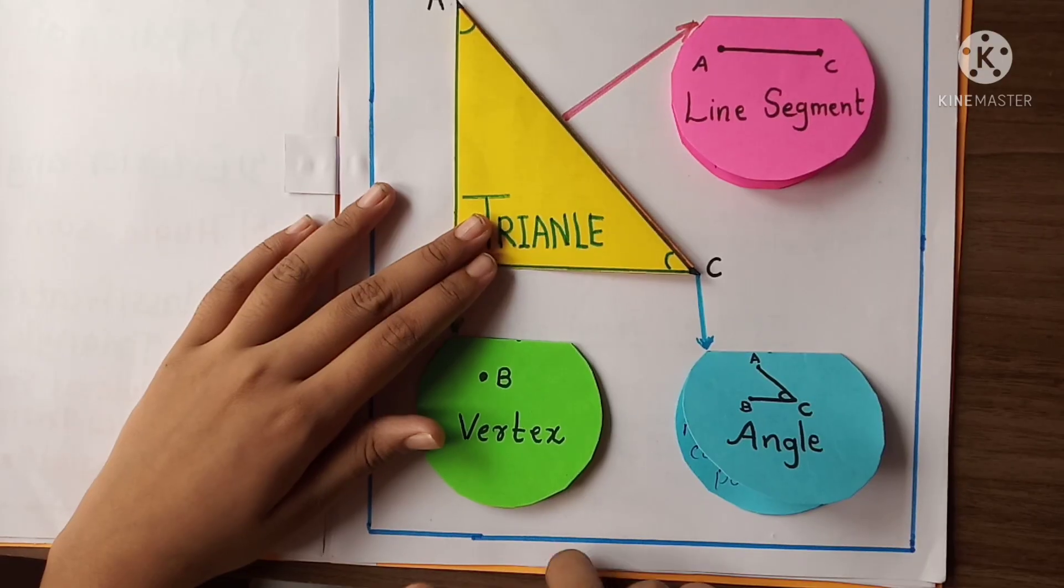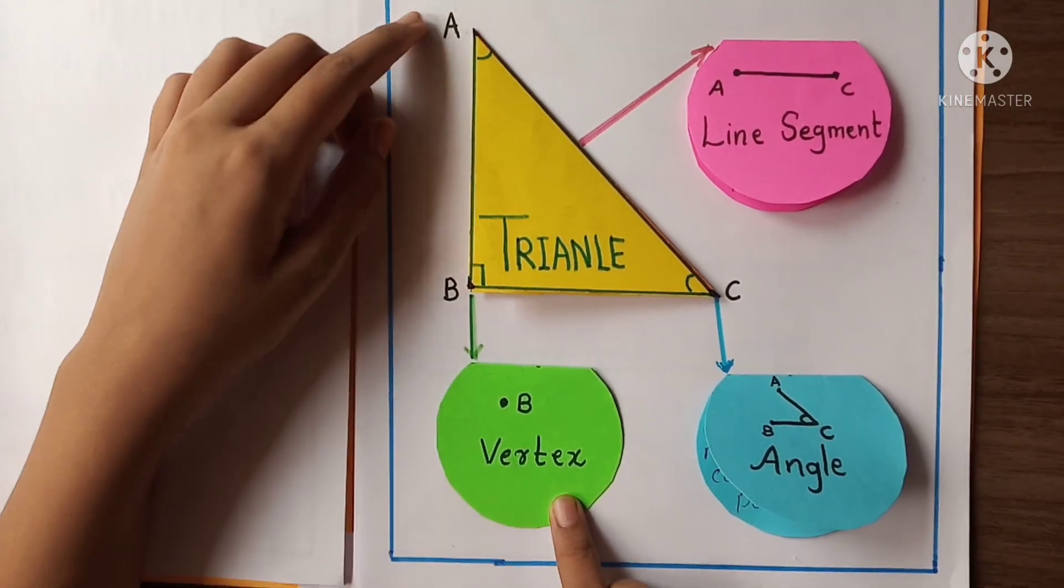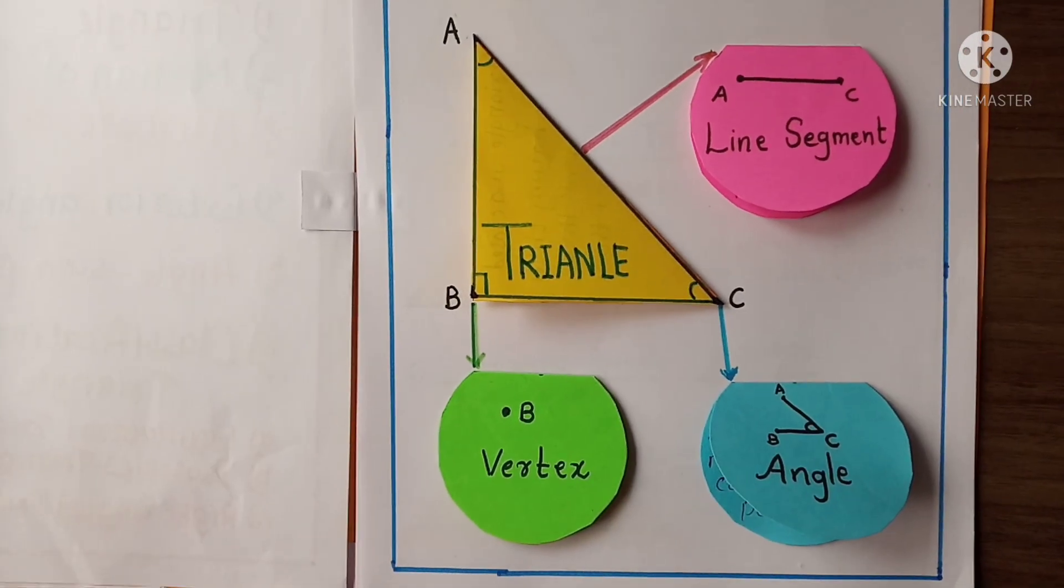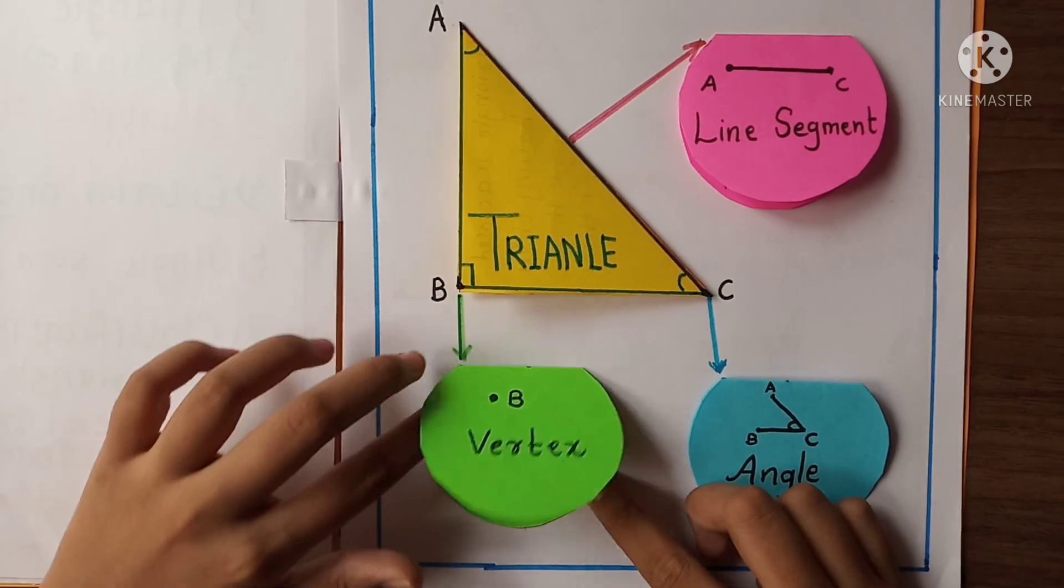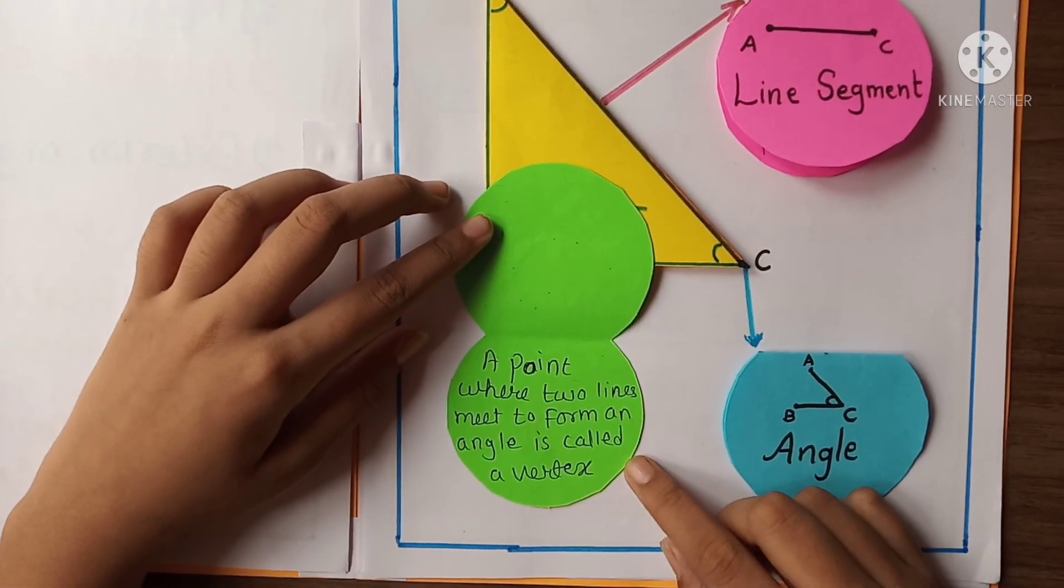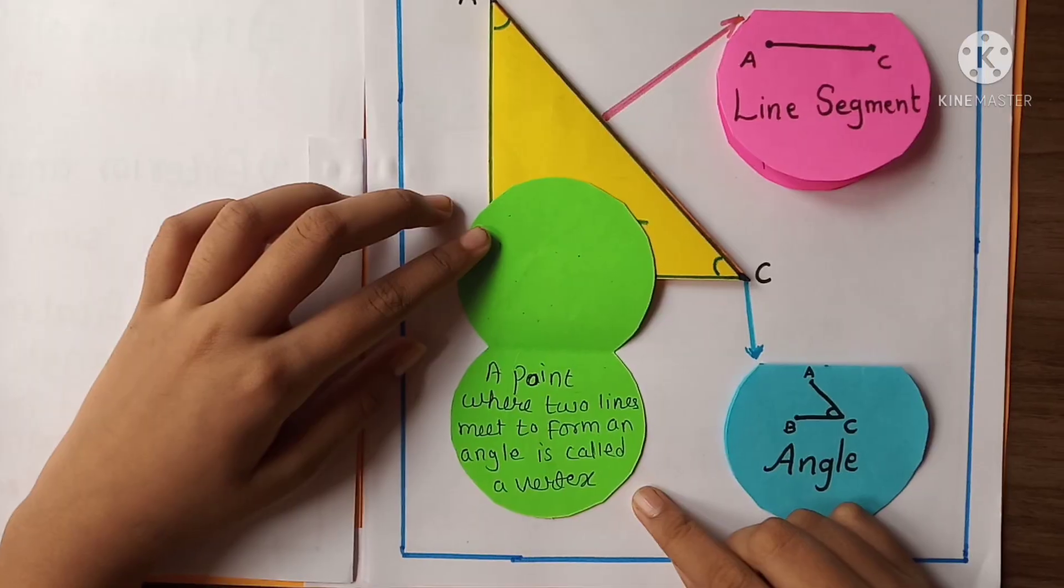And here is the vertex. And if there are more than one vertex, the plural of vertex is vertices. So let's see the definition of vertex. A point where two lines meet to form an angle is called a vertex.